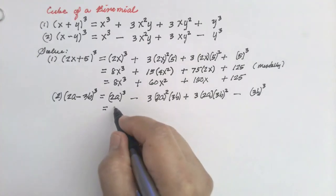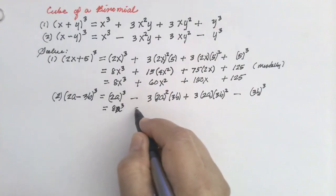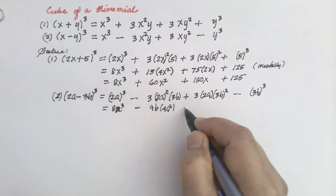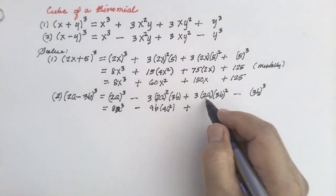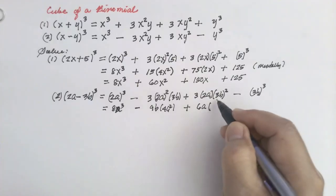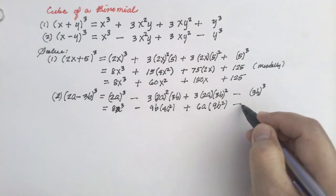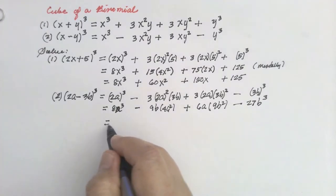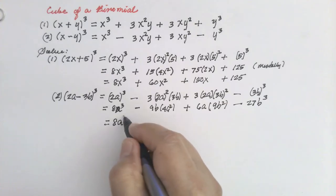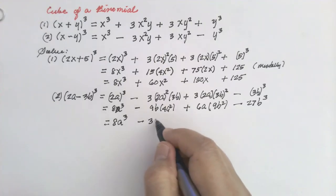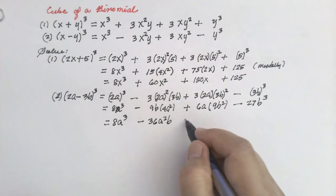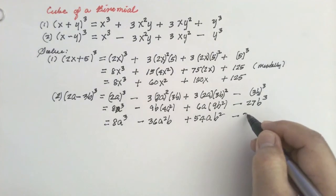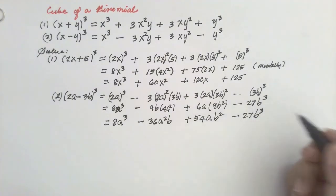Now simplify. This will become 8a cube, minus this will be 9b times 4a square — that is 36a squared b — plus this will become 6a times 9b square which is 54ab square, minus this will become 27b cube. So the final answer is 8a cube minus 36a squared b plus 54ab square minus 27b cube.